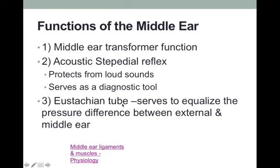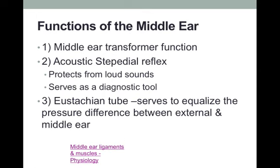The Eustachian tube connects the middle ear space. It originates from the interior wall of the middle ear, leading into the nasopharynx. Its purpose is to equalize the pressure on both sides of the tympanic membrane — the middle ear and the external ear — which is important to maintain an optimum vibrating surface of the tympanic membrane. In clinical cases where this is affected, such as an upper respiratory tract infection, the Eustachian tube fails to do its job, resulting in negative pressure within the middle ear that may progress into a middle ear infection and a conductive hearing loss.